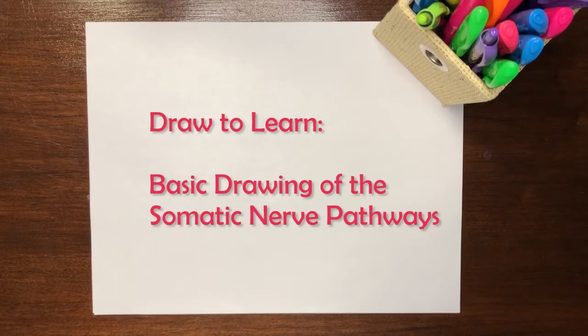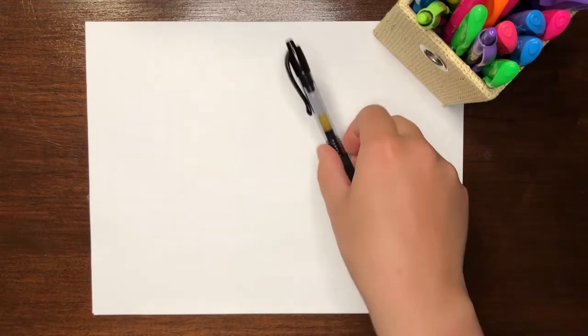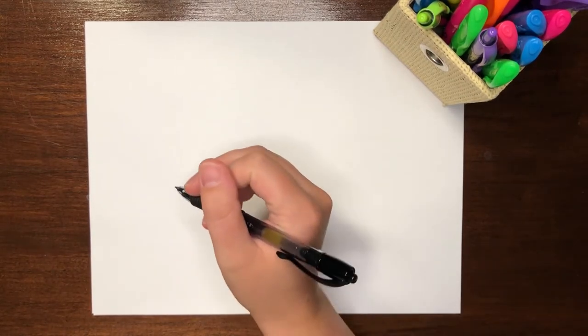In this video, we will draw a basic diagram of the main somatic nerve pathways. To get started, you will need paper and as many different colored pens or pencils as you desire. I will be using Pilot gel pens and Sharpie highlighters to color code my drawing for clarity.